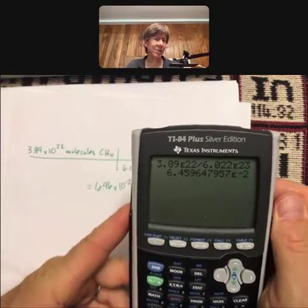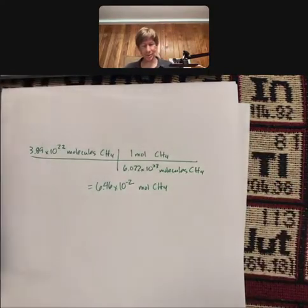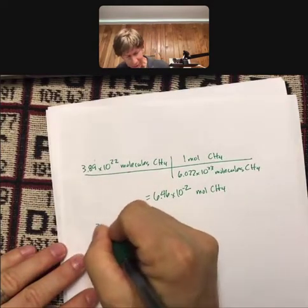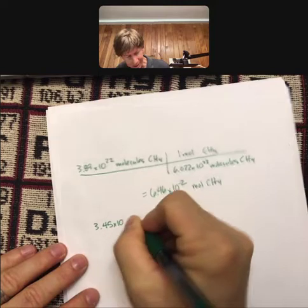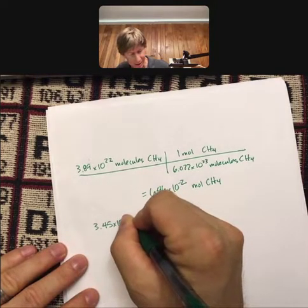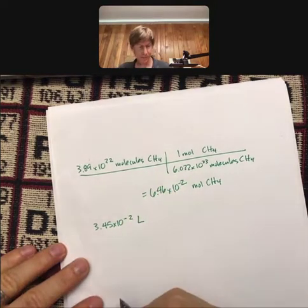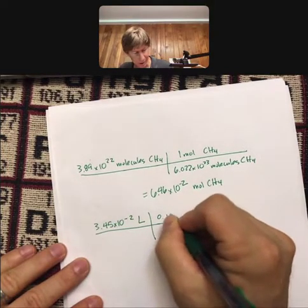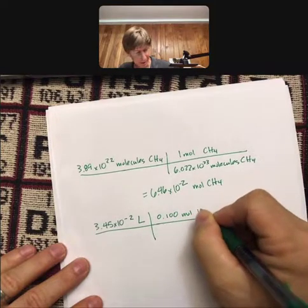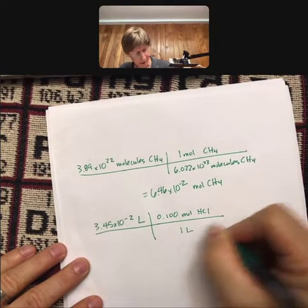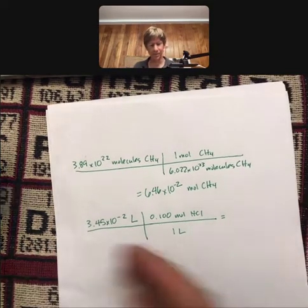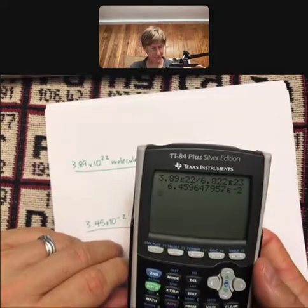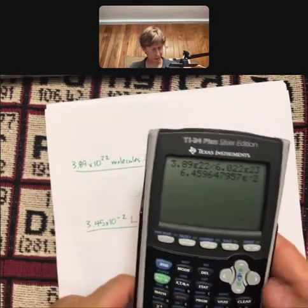Now let's tackle a problem where you use negative exponents. And let's do this. Let's do 3.45 times 10 to the minus 2 liters. And then it's going to be multiplied times 0.100 moles of HCl per one liter. So another typical calculation that we do. So clear.